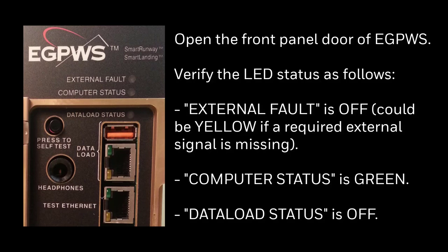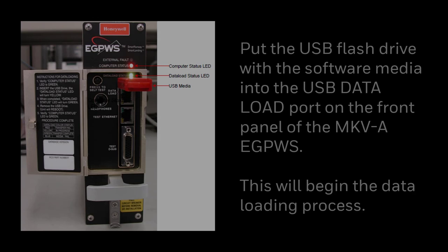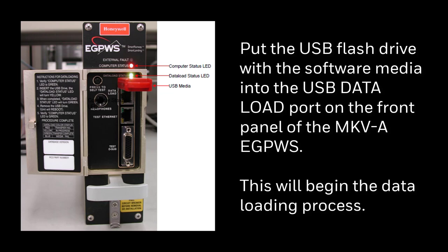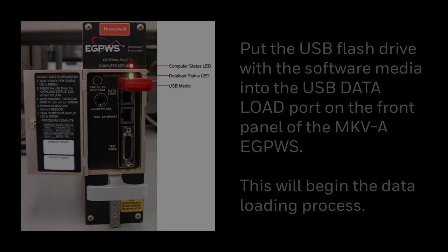External fault LED is off — it could be yellow if a required external signal is missing, which is fine for data loading. Computer status LED is green. Data load status LED is off. Insert the USB flash drive with the software media into the USB data load port on the front panel of the Mark 5A GPWS. This will begin the data loading process.